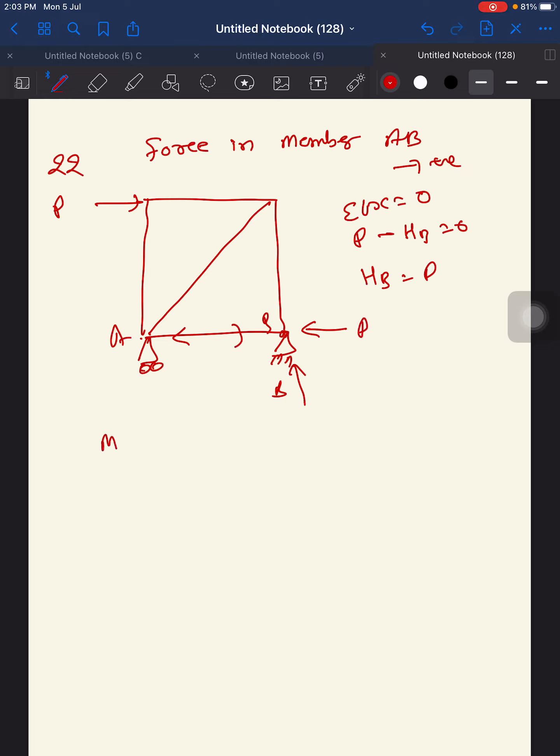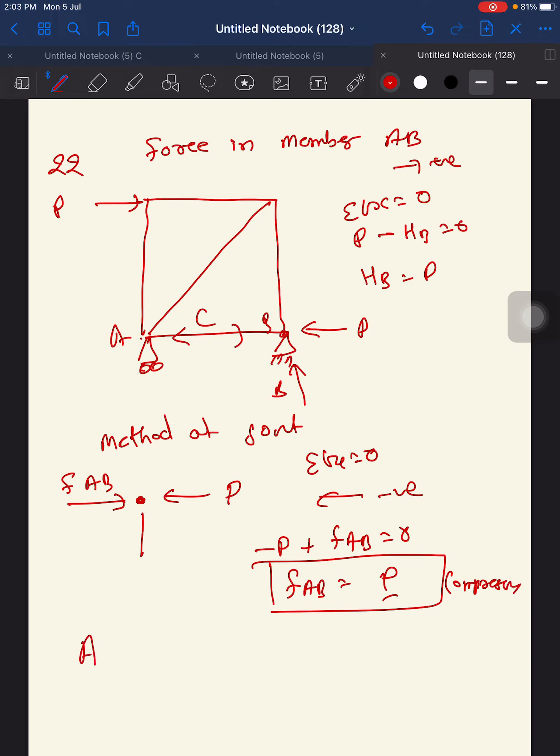Now use method of joints. So at B location, I am not taking care of vertical force because it's not required right now. And this is your compressive force F_AB. So just use ΣFy = 0. Again, this direction is negative, so -P + F_AB = 0. So F_AB = P. Finished. So our answer is P, and the answer is positive. That is why the assumed direction was correct. So we assumed compression. That is why our answer is A: P compressive.